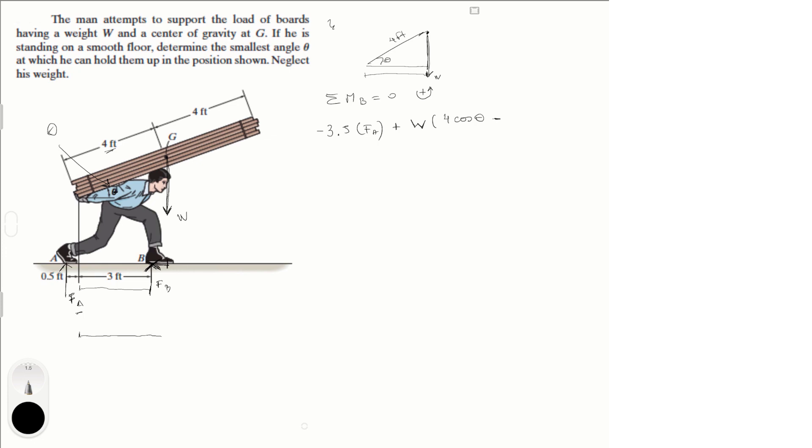So this distance is 4 cosine of theta. This distance is 3, and this is the distance that we're trying to find. So 4 cosine of theta minus 3, and that is equal to zero.